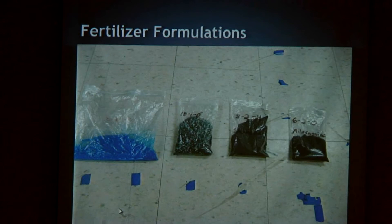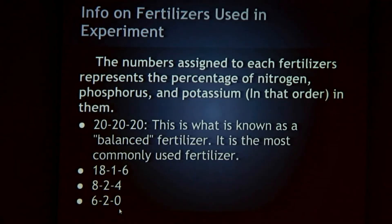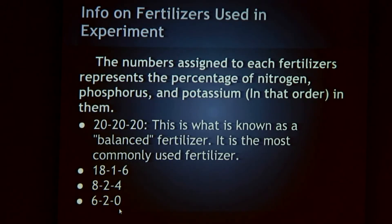Then there's the 18-1-6, the 8-2-4, and the 6-2-0. The numbers represent the percentage of the elements in the fertilizers. The 20-20-20 is the balanced formulation, which is most commonly used. The other three are random formulations that me and my mentor decided to use.